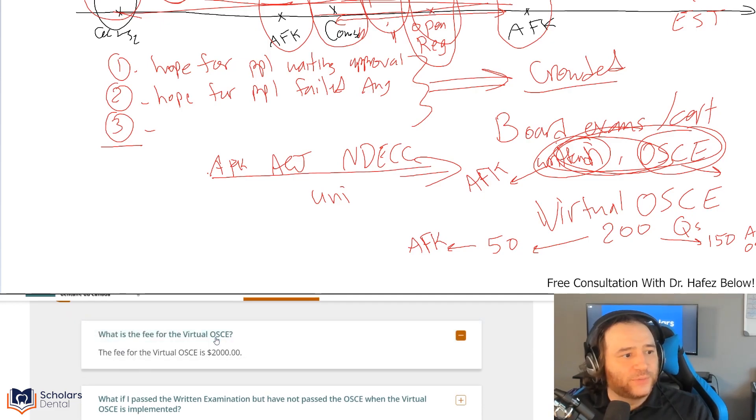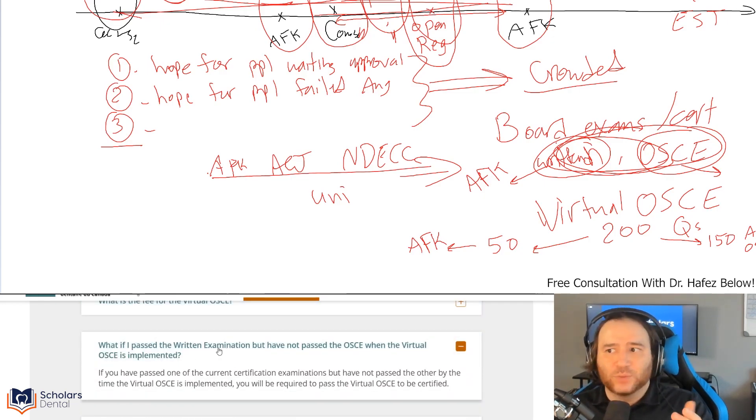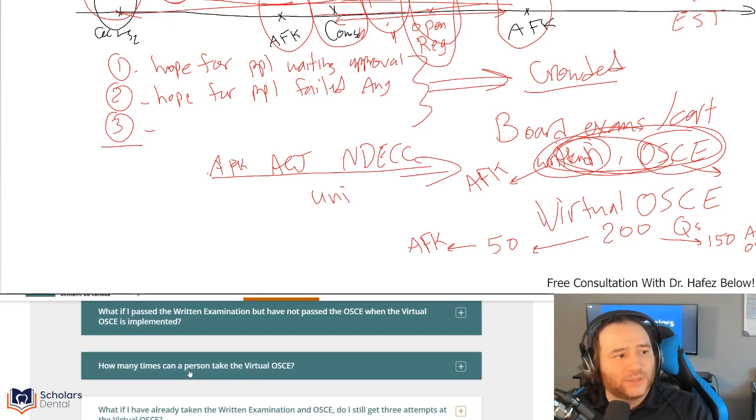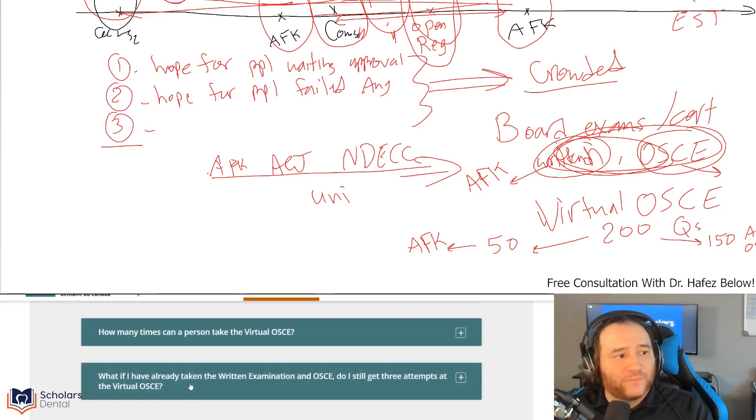What is the fee? $2,000 for Virtual OSCE. What if I passed the written exam but didn't pass the OSCE? Yes, you still have to do Virtual OSCE. If you passed one of the cert exams and not the other, you still have to do Virtual OSCE. How many times can a person take Virtual OSCE? Still three times.